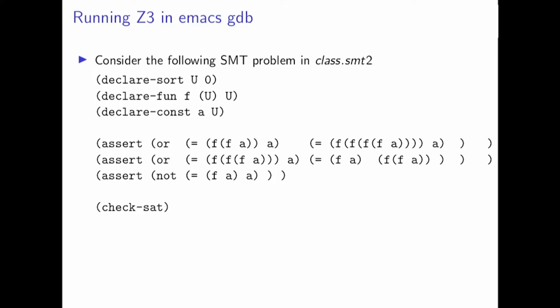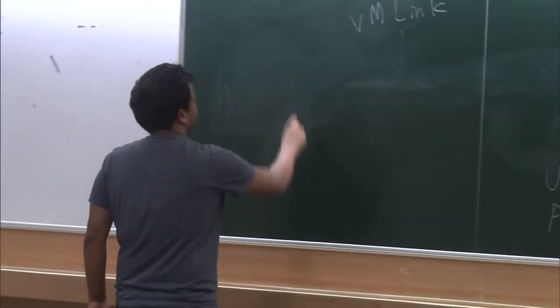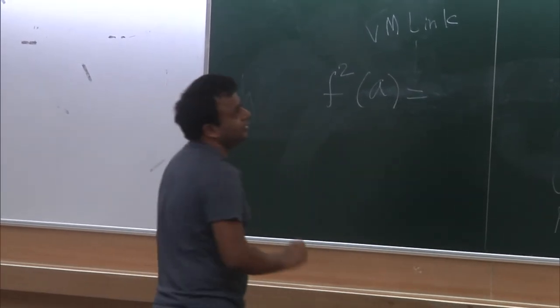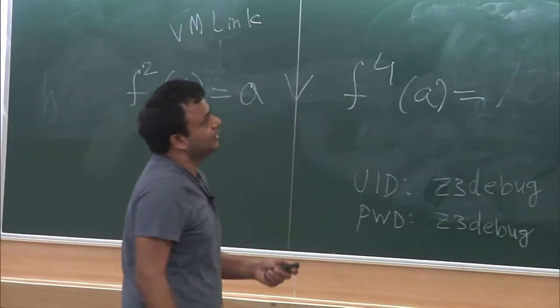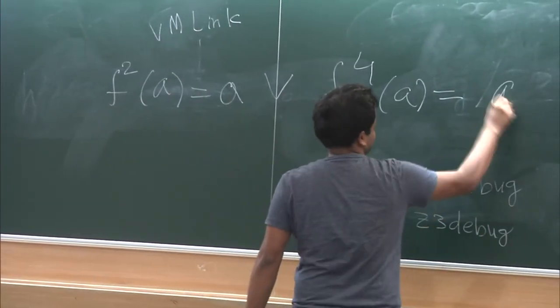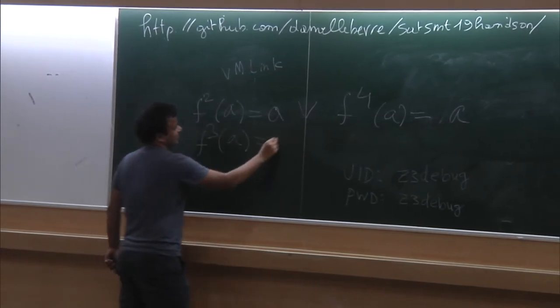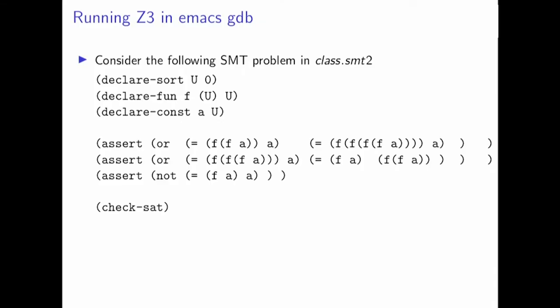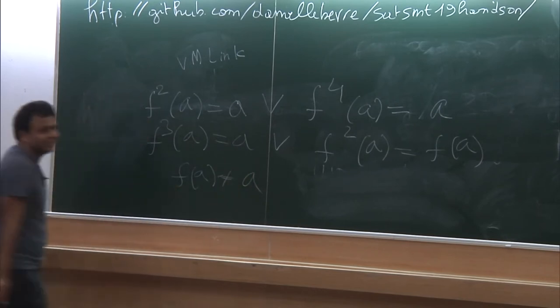The example is about function f which takes an uninterpreted type. The facts we know: f squared of a equals a, or f to the power 4 of a equals a. The second statement says f cubed of a equals a, or f squared of a equals f of a. The last says f of a is not equal to a. The question is: is this satisfiable or unsatisfiable?